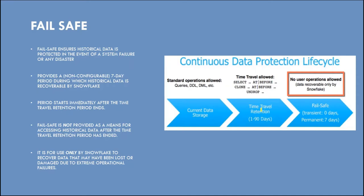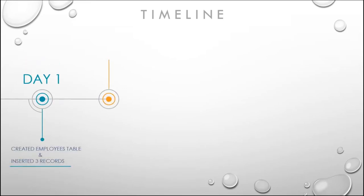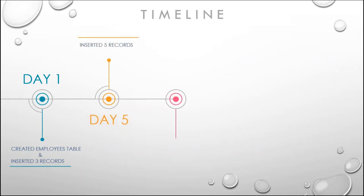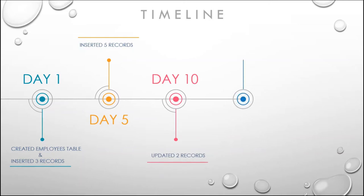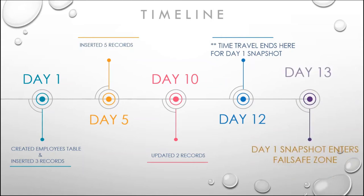Let's again go to the timeline we already saw in the time travel section. We were creating an employees table — a permanent table — in which we inserted three records on day one, then inserted five records on day five, and updated two records on day ten. The employees table has 12 days of time travel period, and after 12 days it will automatically move into the failsafe zone.